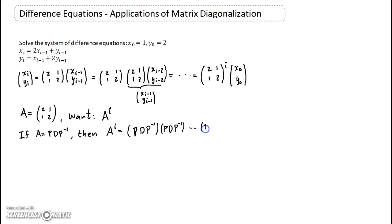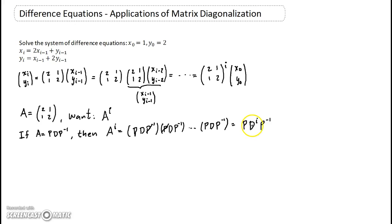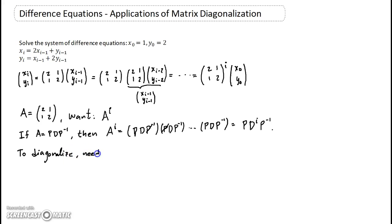The beauty of it is that the P⁻¹P in between always cancel, and you end up with PD^i P⁻¹. This is very easy because the power of a diagonal matrix is just the power of the diagonal entries. So what we're going to do is diagonalize the matrix — and to diagonalize, we're going to need the eigenvalues.